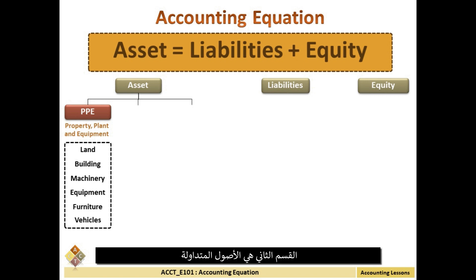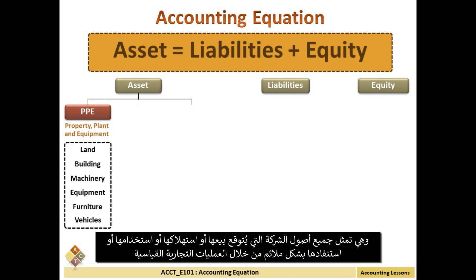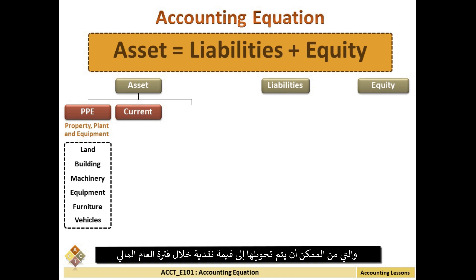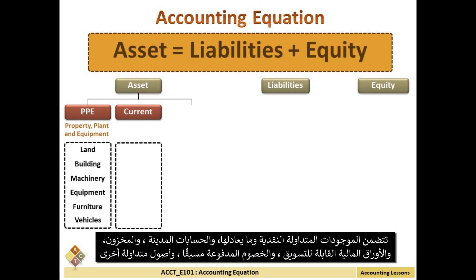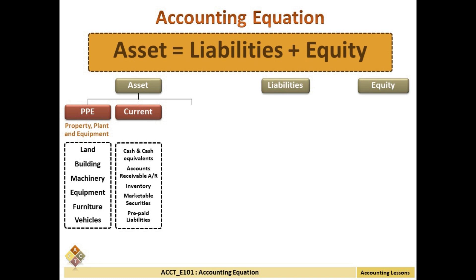The second section is current assets, which represent all the assets of a company that are expected to be conveniently sold, consumed, utilized, or exhausted through standard business operations, leading to their conversion to cash value over the next one-year period. Current assets include cash, cash equivalents, accounts receivable, stock inventory, marketable securities, prepaid liabilities, and other liquid assets.